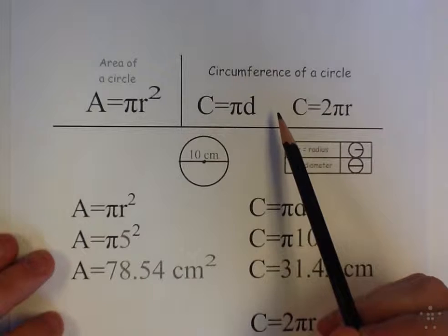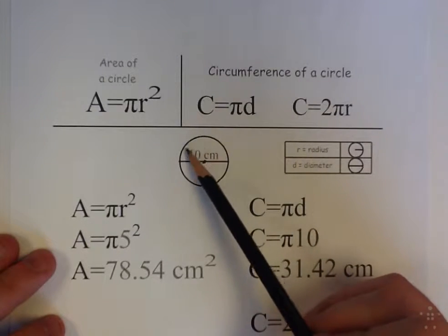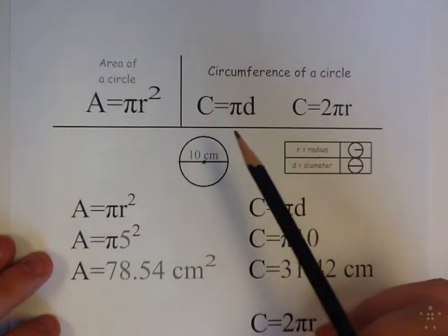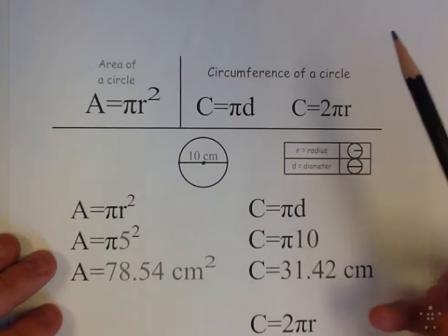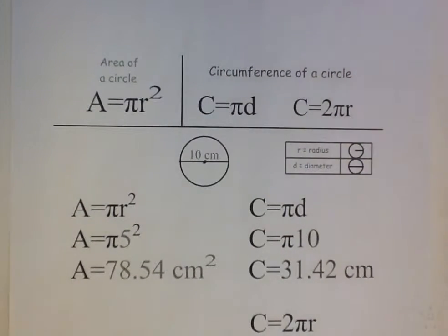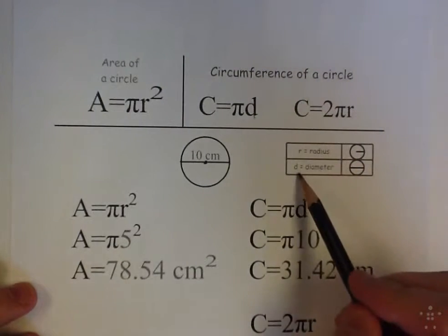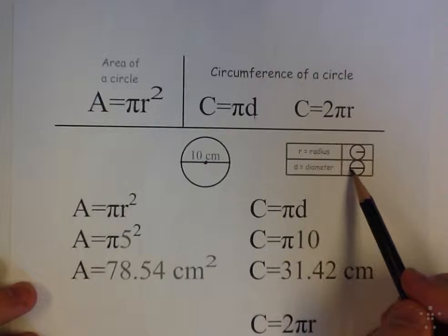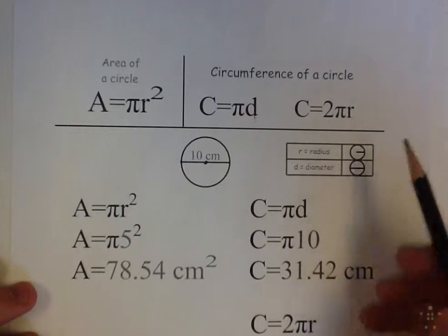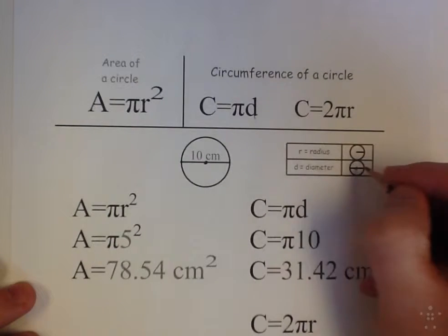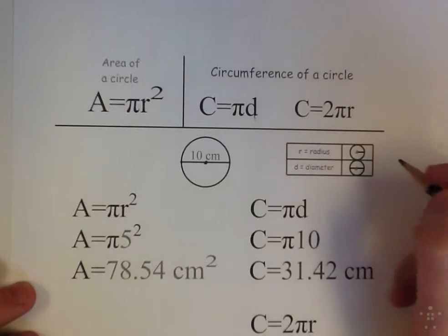Circumference of a circle - if you want to find the circumference, which is the distance around a circle, you can use either of these formulas. This formula is easier if you know the D. D is diameter, and a diameter is any line that goes through a circle through the center. A radius is any line that goes from the center to the edge of a circle.